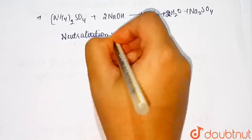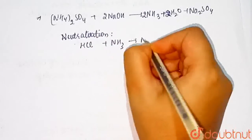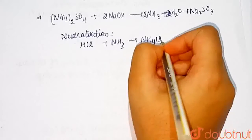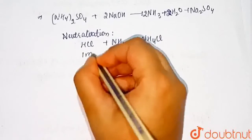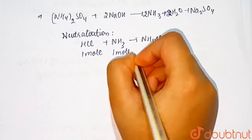Now neutralization reaction is HCl plus NH3, it will give NH4Cl, ammonium chloride. 1 mole of HCl here, we see that 1 mole of HCl utilizes 1 mole of ammonia.